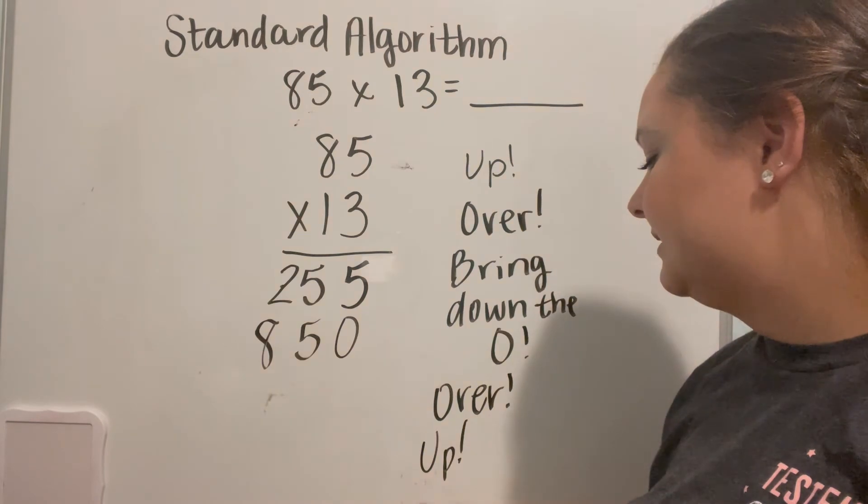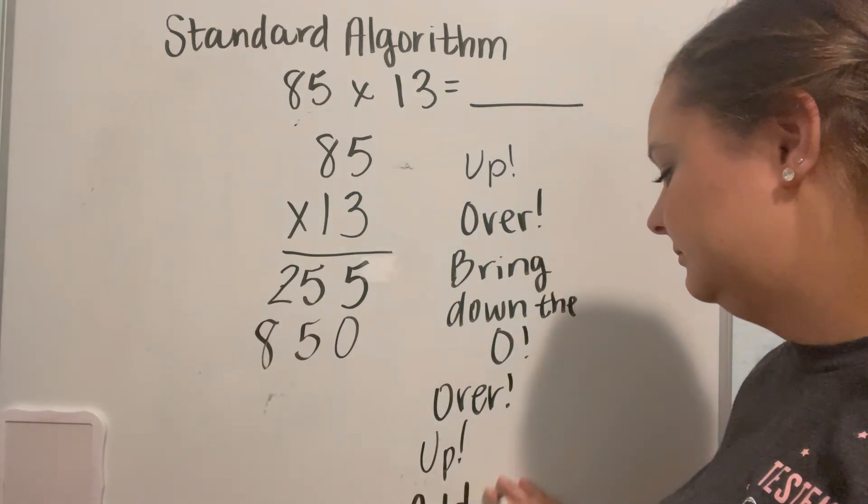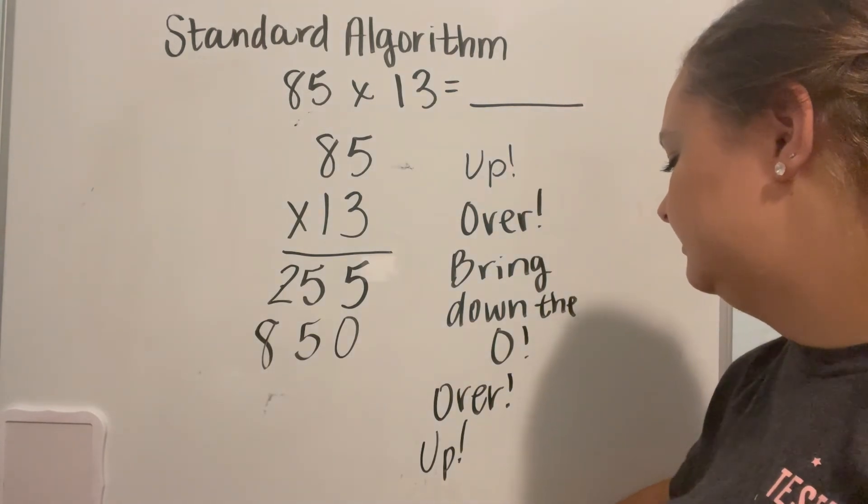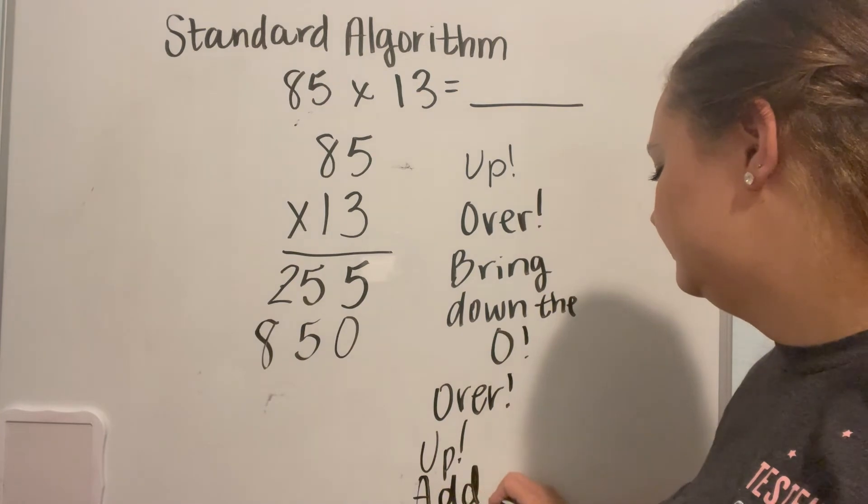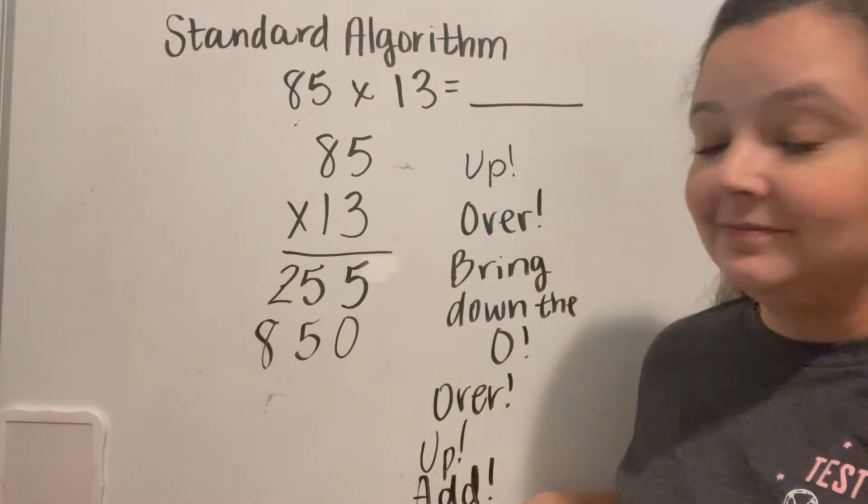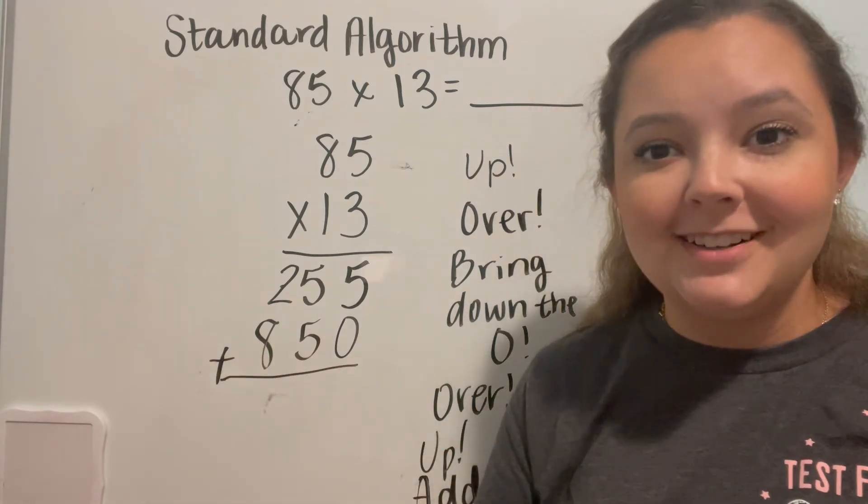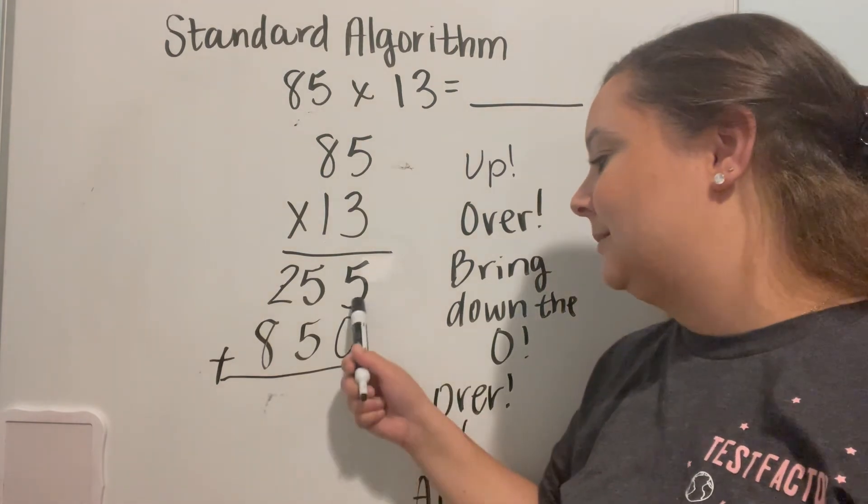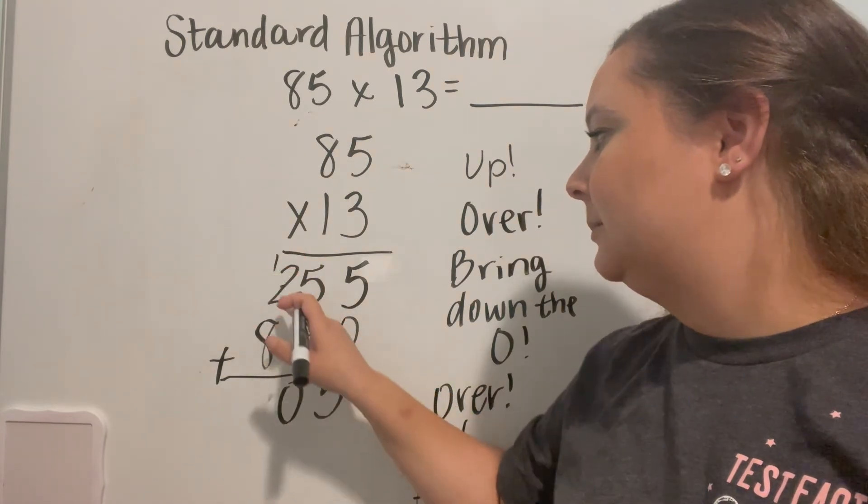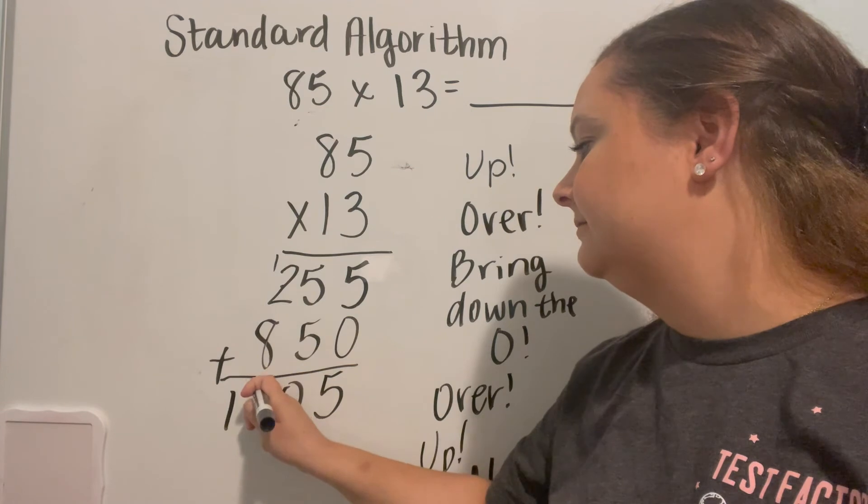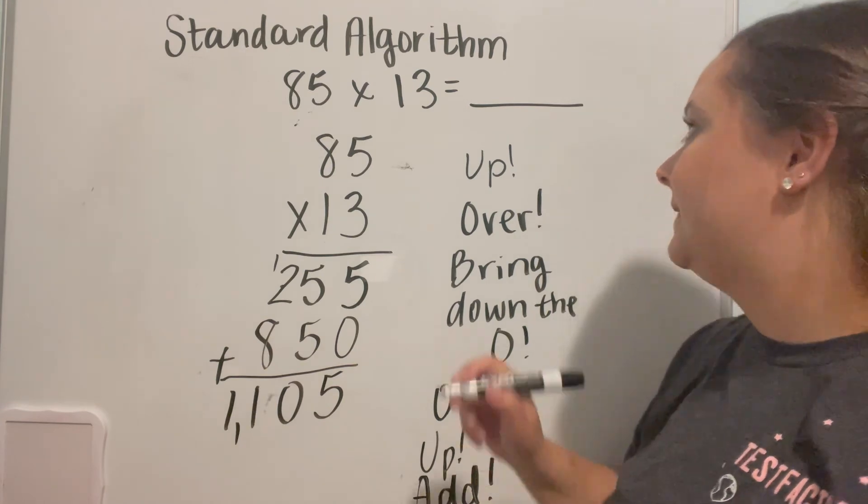And last but not least, we add them up. So we're going to take our two numbers here that we've gotten, which are partial products, and we are going to add them together. So we have 5 plus 0 gives us 5. 5 plus 5 is 10, carry the 1. 1 plus 2 is 3, plus 8 is 11. So the answer to our equation of 85 times 13 is 1,105.